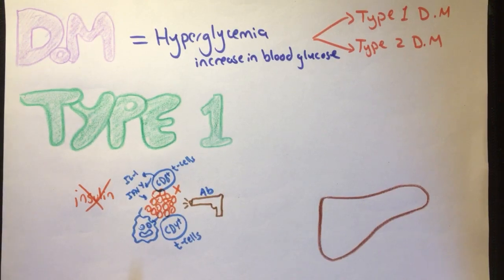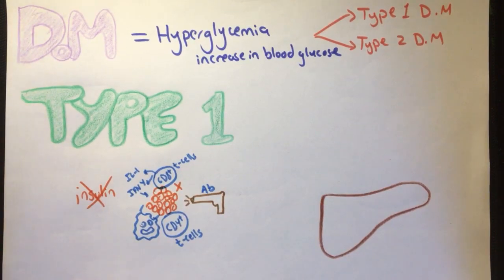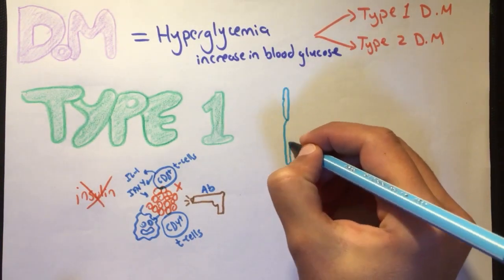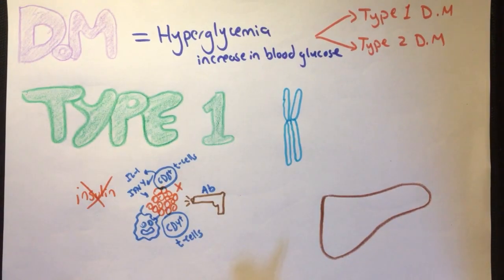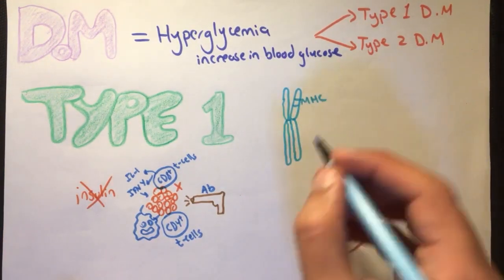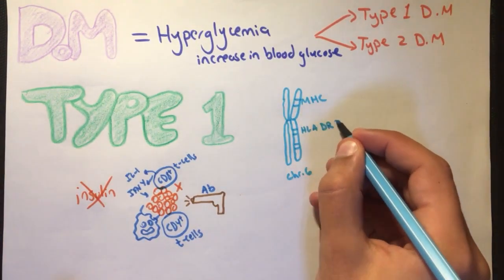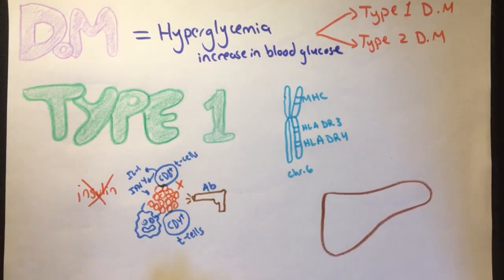Moreover, there will be autoantibodies against insulin and glutamic acid. So type 1 diabetes is strongly associated with genetic predisposition, including class 2 MHC on chromosome 6, in addition to HLA-DR3 and HLA-DR4, which are markers your body uses to know what cells belong to it.